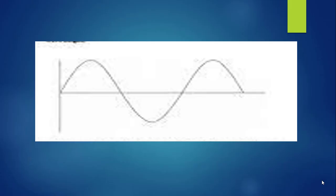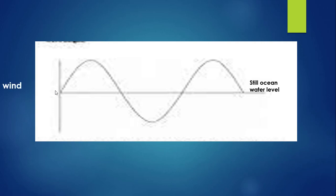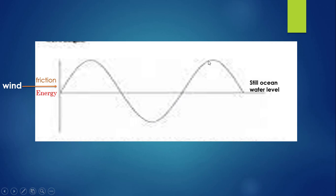Now look at this picture. Suppose this is the still ocean water level. Waves are formed when the wind blows across the surface of the ocean. A friction between the wind and the ocean surface is created, and due to this friction energy is generated. Due to this energy, the water is forced to move upward. The force of gravity then pulls the water back down. The falling water pushes the water below it upward, forming a new position, and gravity pulls it down again — this process repeats over and over.